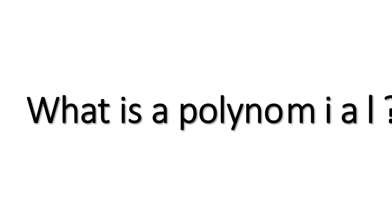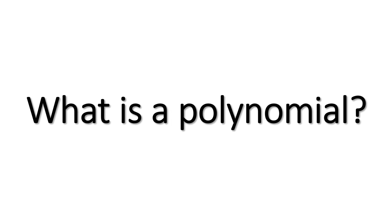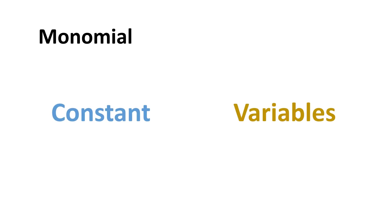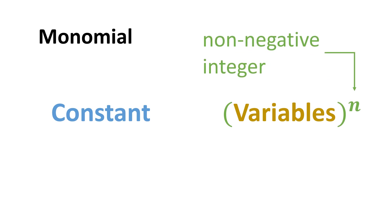To understand what is a polynomial, we need to know what is a monomial. Let's say there is a constant and variables. Now if the variables are raised to non-negative integers and then we multiply them together, we obtain a monomial.